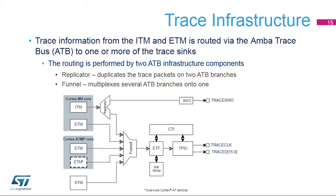Trace from the ITM, not the ETM, can be directed to the single-wire trace port. In dual-core devices, the ITM trace from both cores can be directed to the SWO and combined in the SWO trace funnel. However, since there is no formatting in the SWO, it is not possible for a trace port analyzer to separate the trace streams. Therefore, it is recommended that the funnel be used to manually select one ITM at a time for output on the SWO. If both are needed, the TPIU should be used.